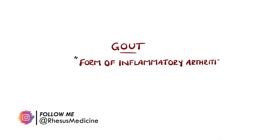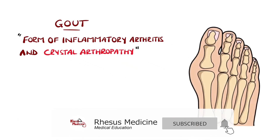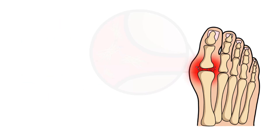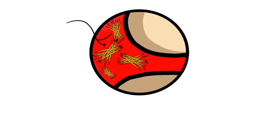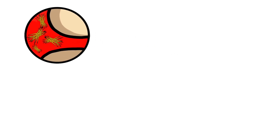Gout is a form of inflammatory arthritis. Specifically, it's a crystal-induced arthropathy, meaning disease due to crystals being deposited in or around the joints. Gout is caused by deposition of monosodium urate crystals within tissues, a substance that ultimately comes from metabolism of purines, which are compounds found in the body — for example, adenine, guanine, and xanthine.